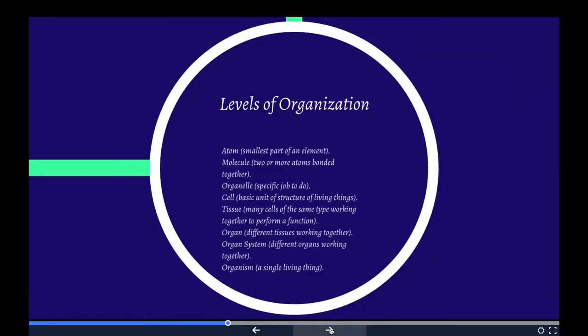Tissues are many cells of the same type working together to perform a function. An organ is different tissues working together to form a structure with a specific function, like the heart. An organ system is different organs working together to perform a major process in an organism. A good example would be the digestive system—that's an organ system. An organism is a single living thing that has all the characteristics of life, such as a human or an animal.